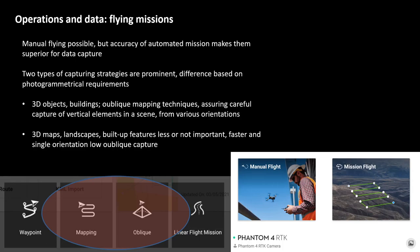The major distinction is: mapping 3D objects or buildings uses oblique mapping techniques, which ensure careful capture of vertical elements in the scene from various orientations. On the other hand, if you're more interested in the general morphology of the landscape and in a map rather than a highly detailed 3D model, you can use a map-oriented approach where vertical built-up features are less important, and it is faster using a single orientation with low oblique camera captures.